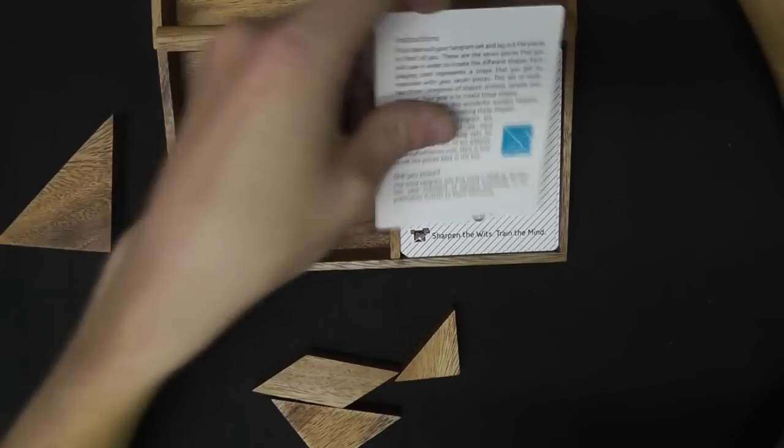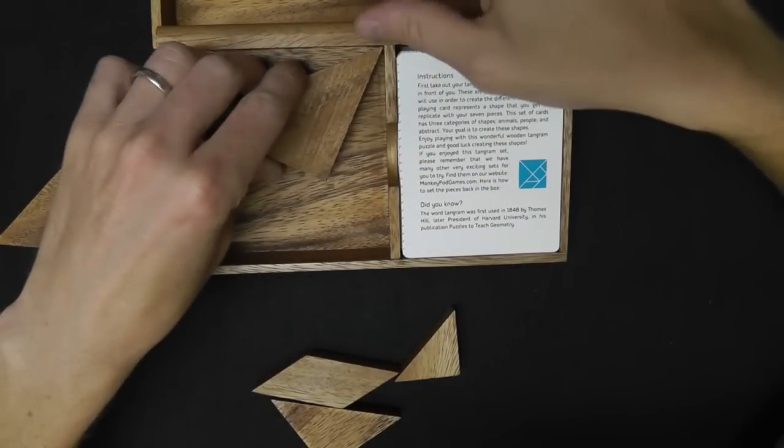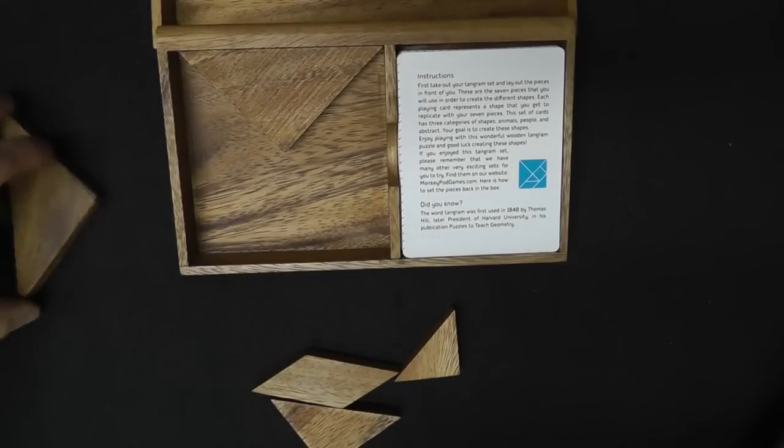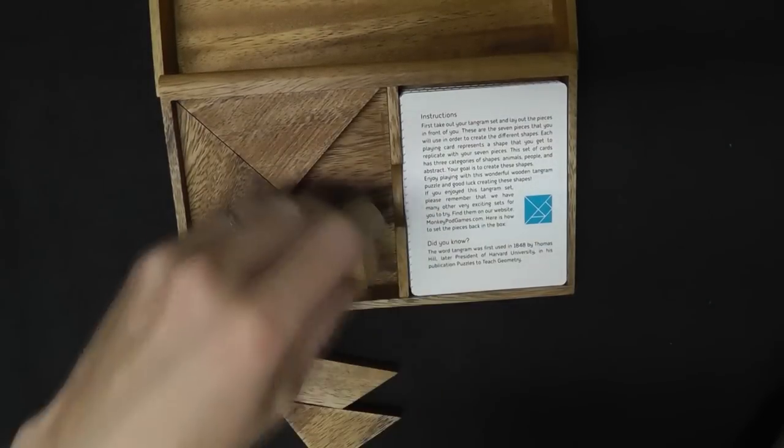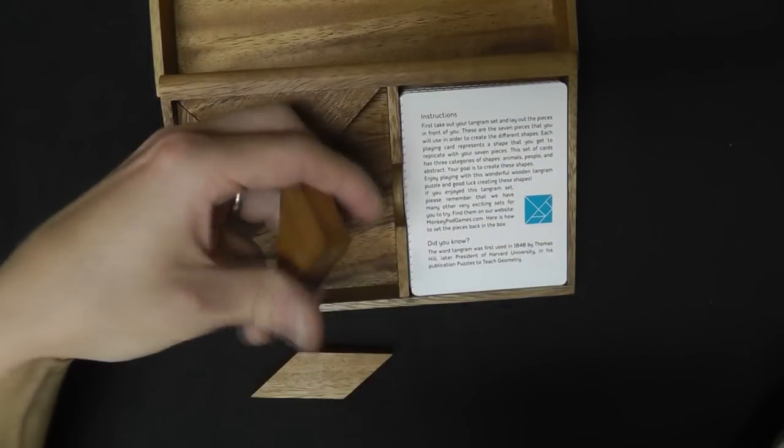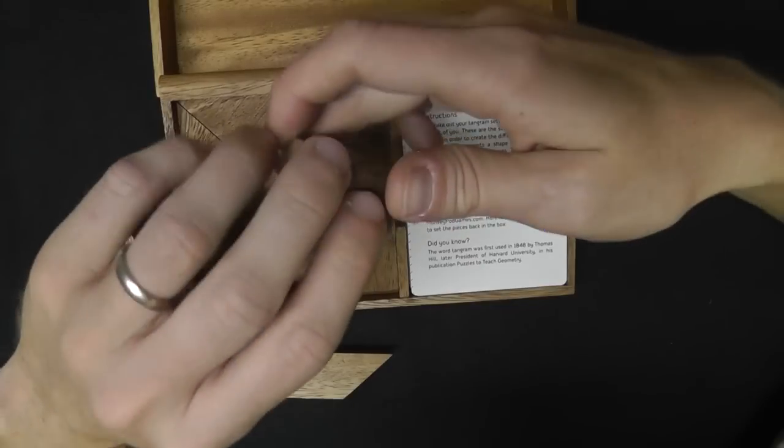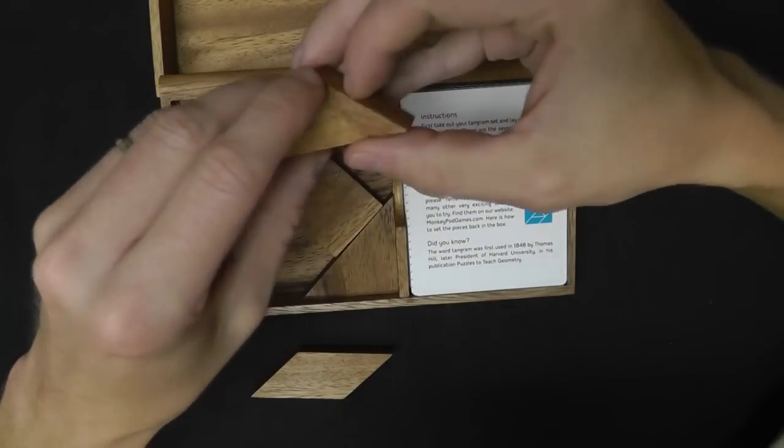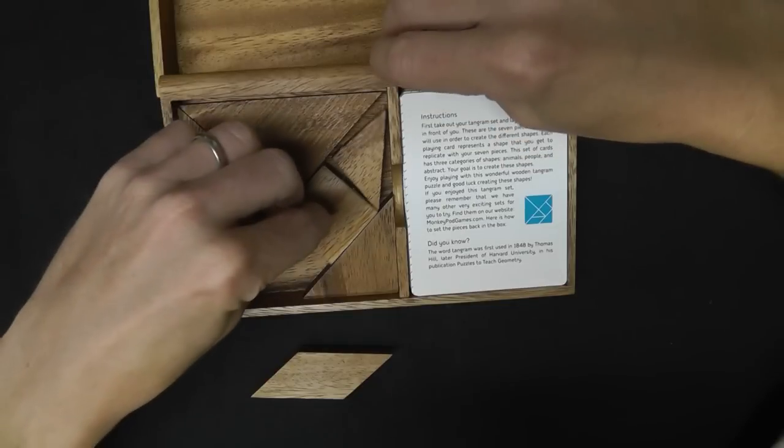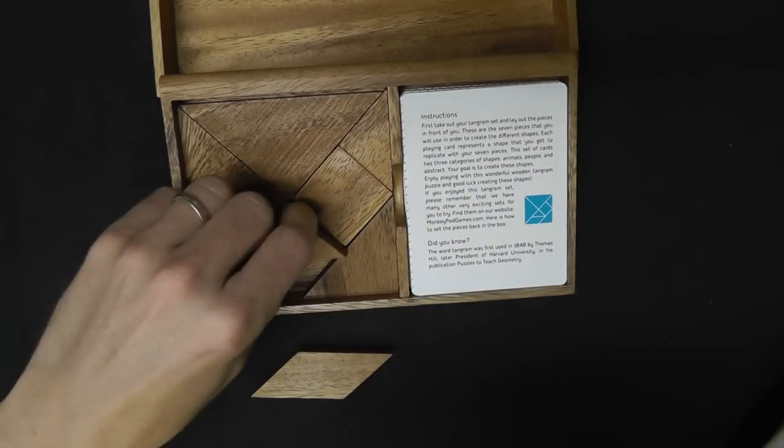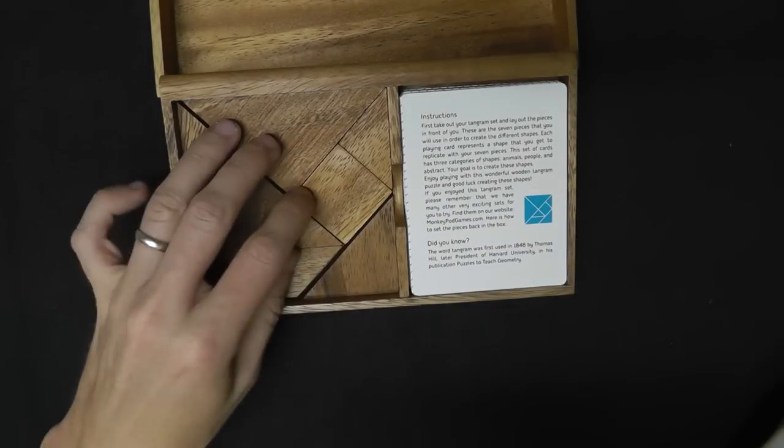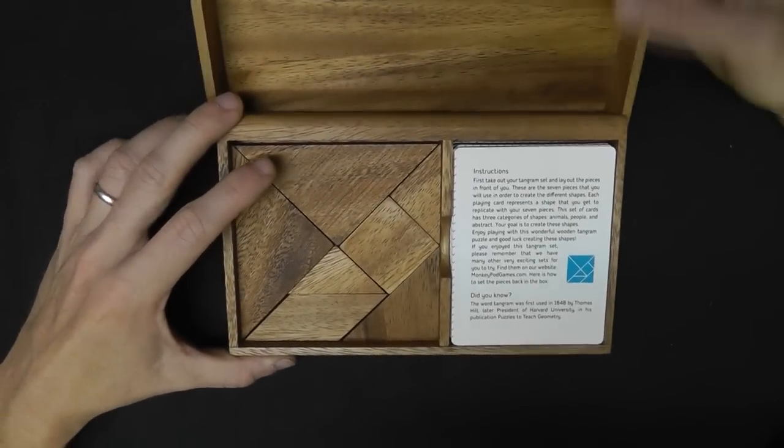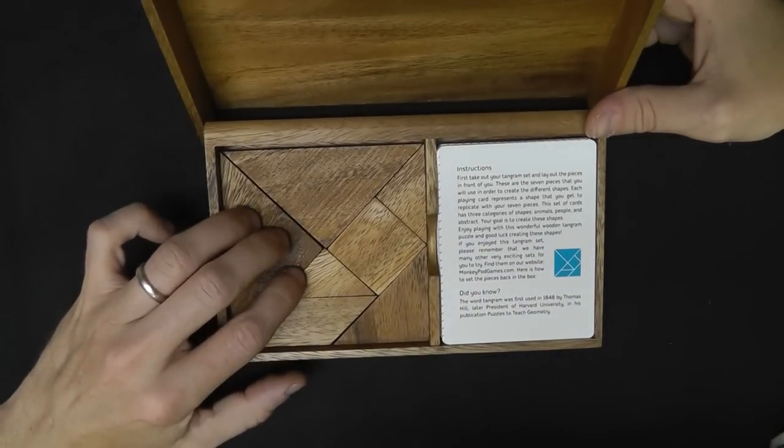So here we go. One triangle, one triangle, two, and then a small triangle. We get a large triangle down here. So that's it. That is what tangrams, or a tangram is all about. A beautiful little set, especially for gifts.